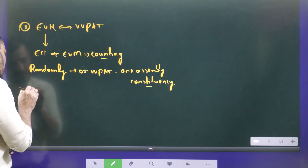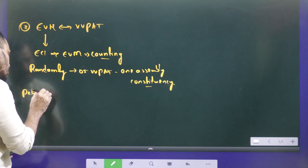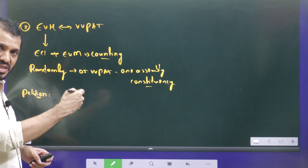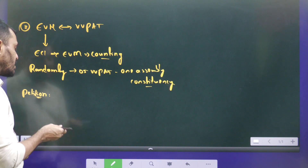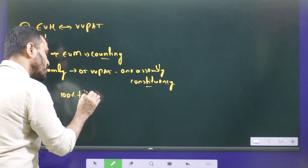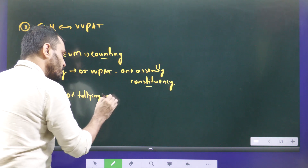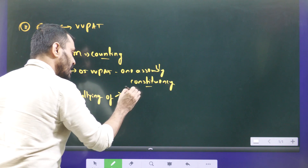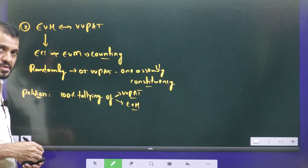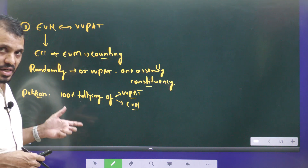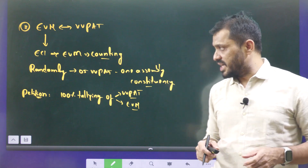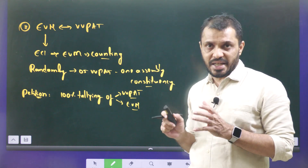This petition is about: rather than selecting 5 random VVPATs and matching the tally with respective EVMs, it is better to do 100% tallying of both VVPAT and EVMs. The Supreme Court has sought the response from the union government as well as the Election Commission of India regarding this. This is the crux of the entire discussion.